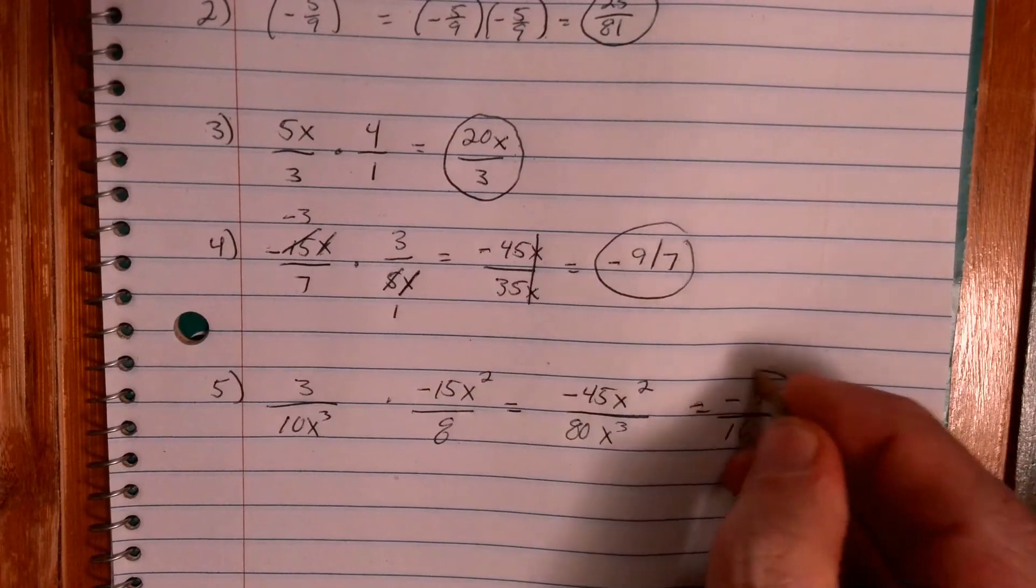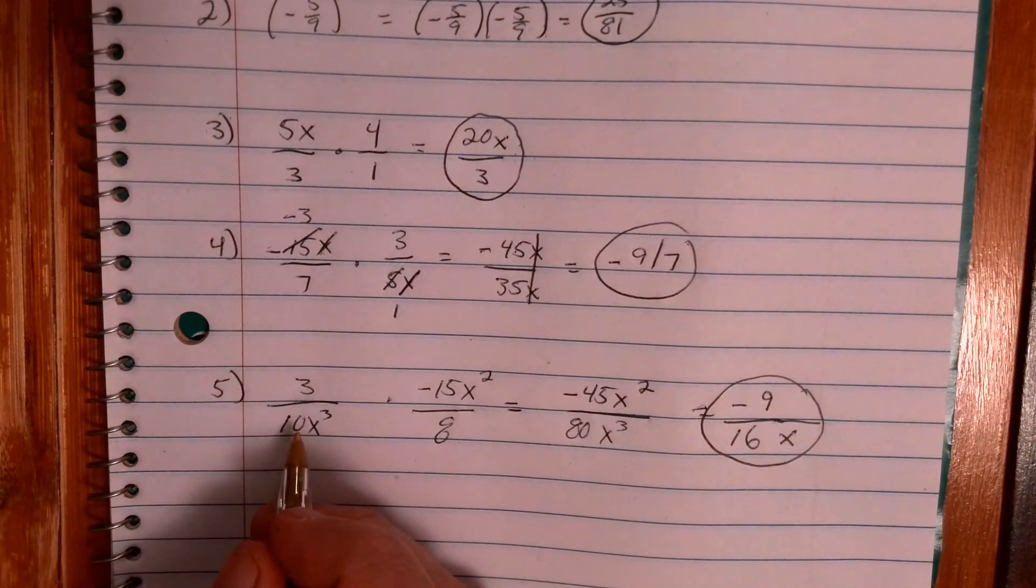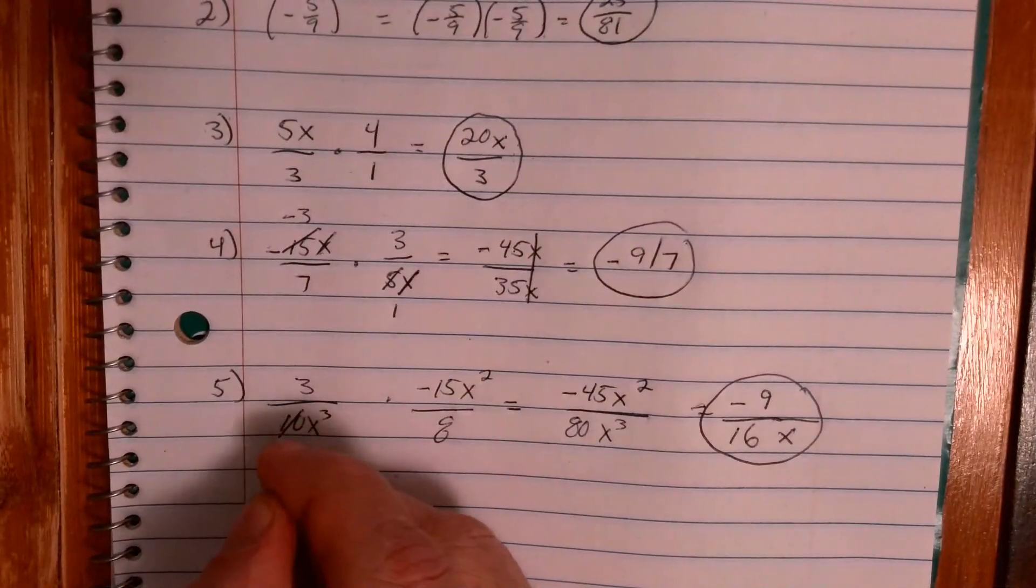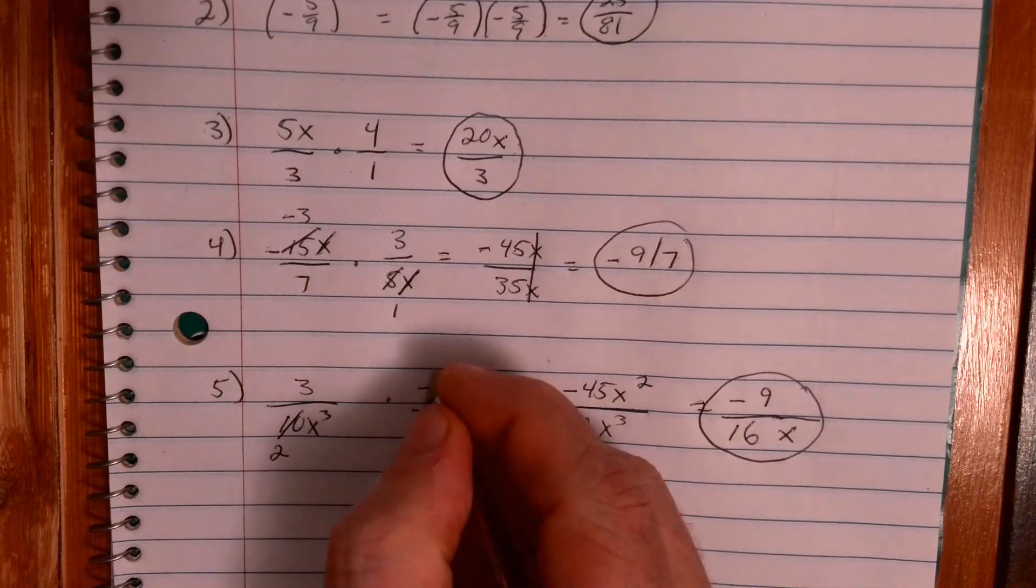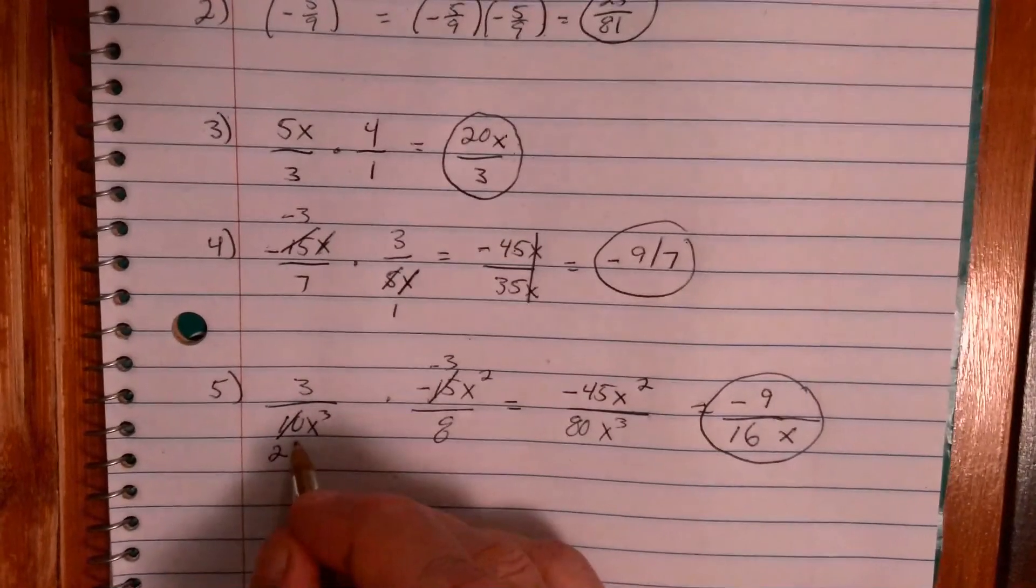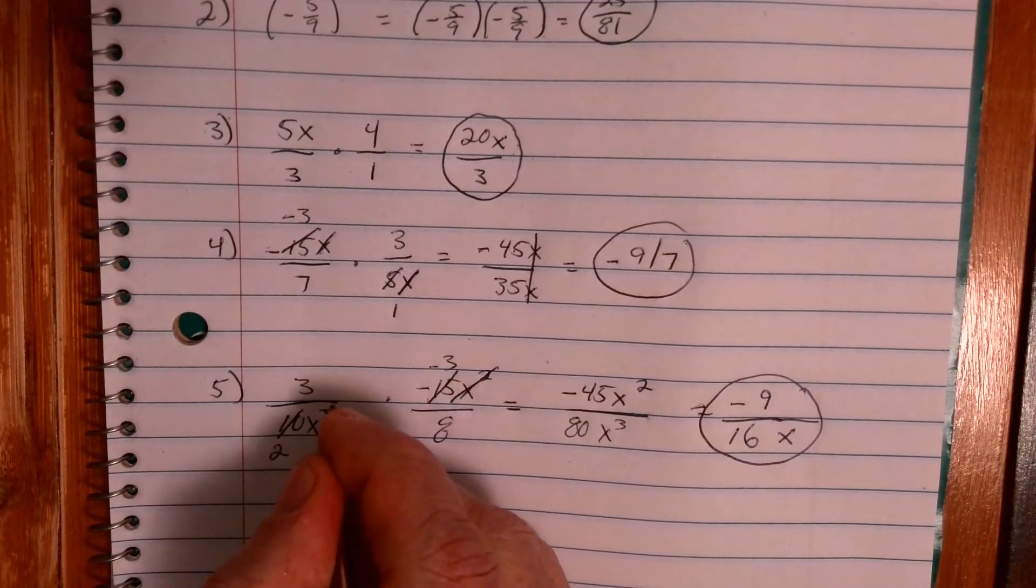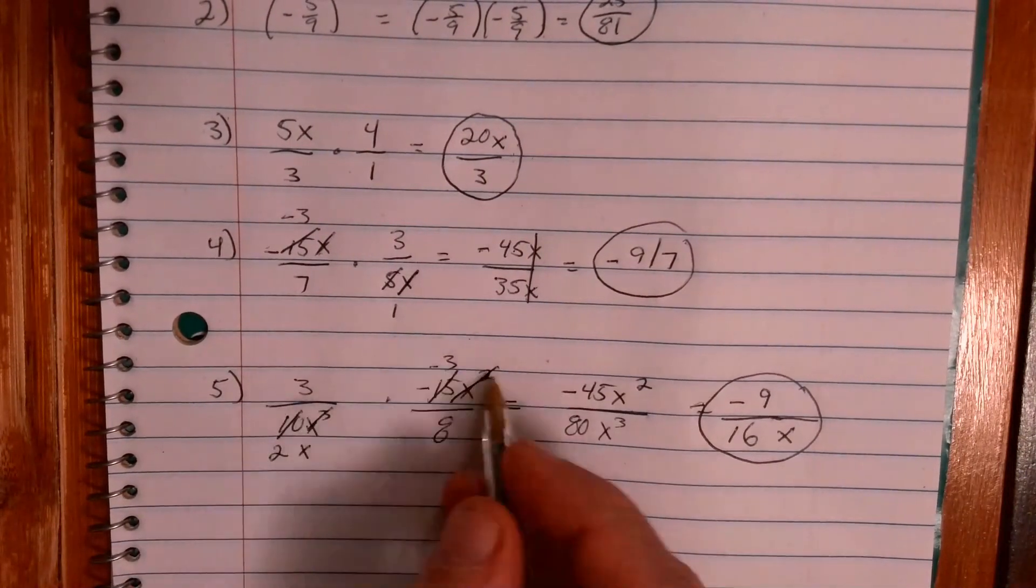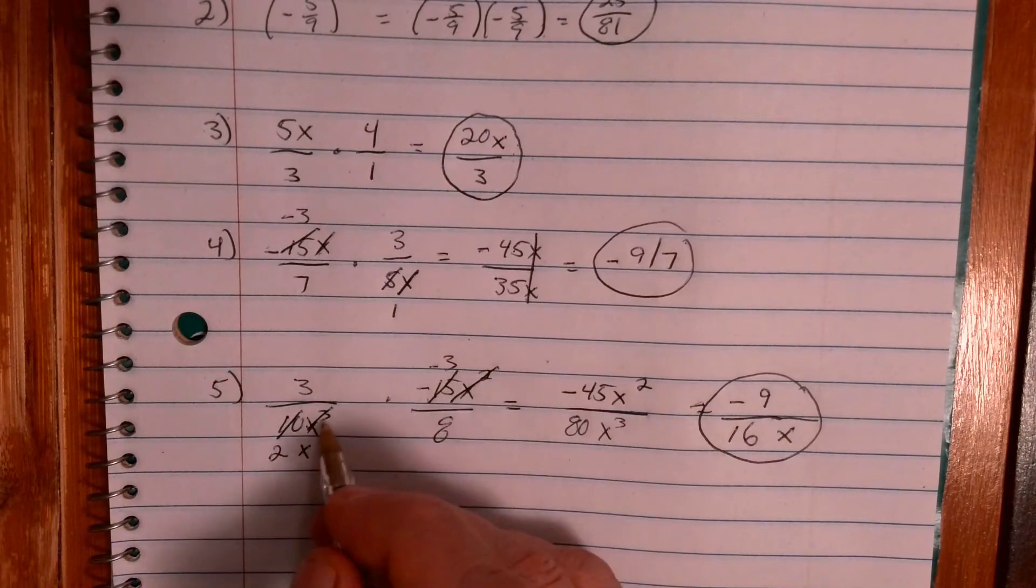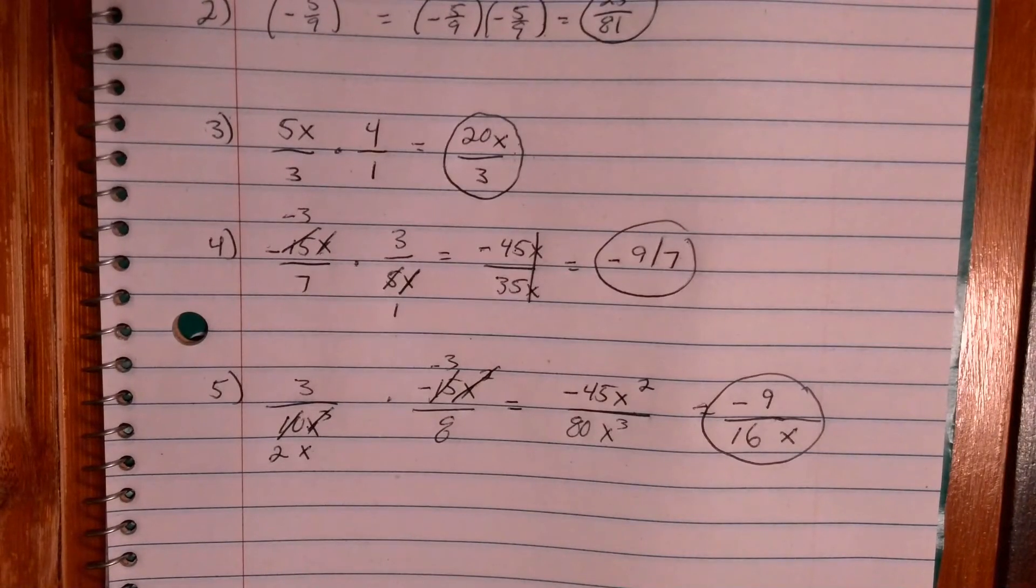Now could you have canceled? Sure, I could have canceled here. 5 goes into 10 twice, 5 goes into 15 we'll put a negative 3 there. 2 x's here, 3 x's here. I can cancel all those out. I can cancel these just to an x, all right? So I take out those 2 x's from the 3 x's, I'm left with an x. These 2 x's just cancel and you are done.